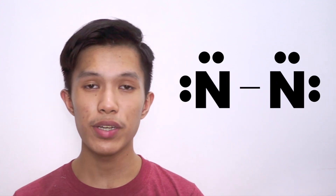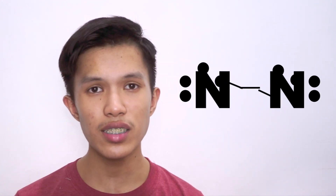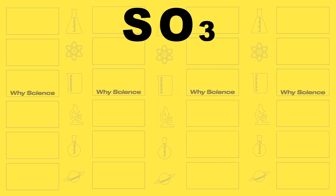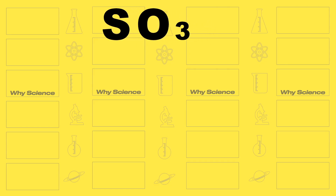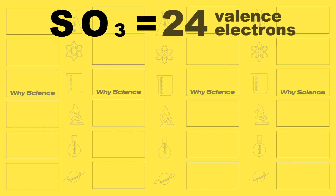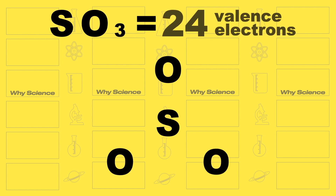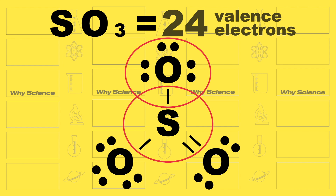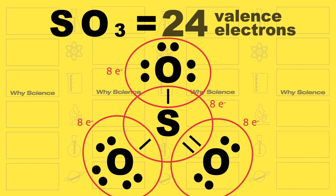If you notice that it seems impossible to have all your atoms follow the octet rule by just using single bonds, then that is the time to try using double or triple bonds — like in the case of sulfur trioxide, where the total valence electrons is 24, and giving everyone single bonds will only give sulfur 6 valence electrons. You have to turn a lone pair from one oxygen atom into a bond with sulfur to give everyone 8 valence electrons, as seen here.